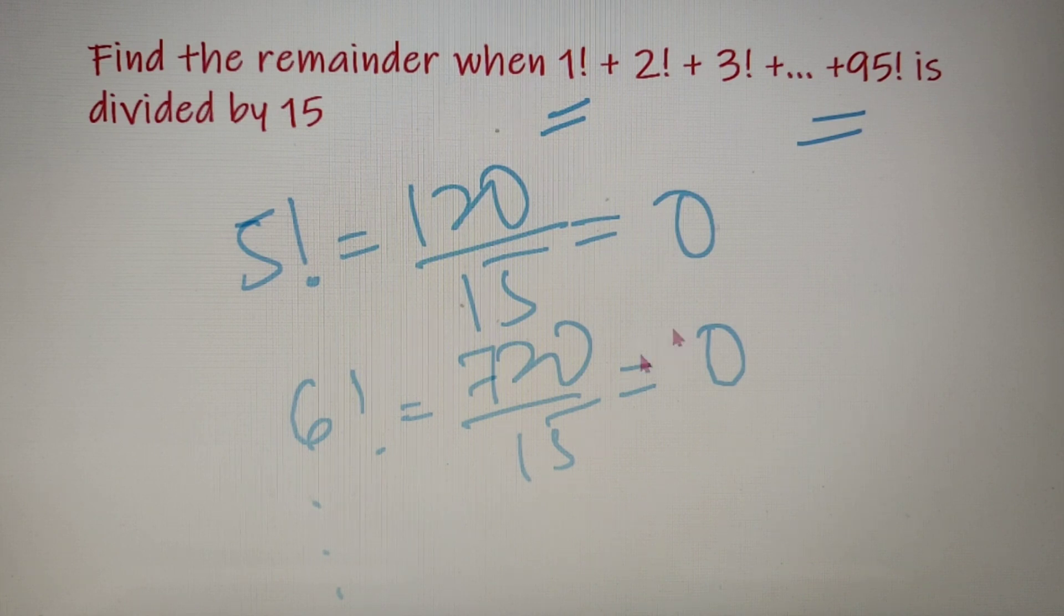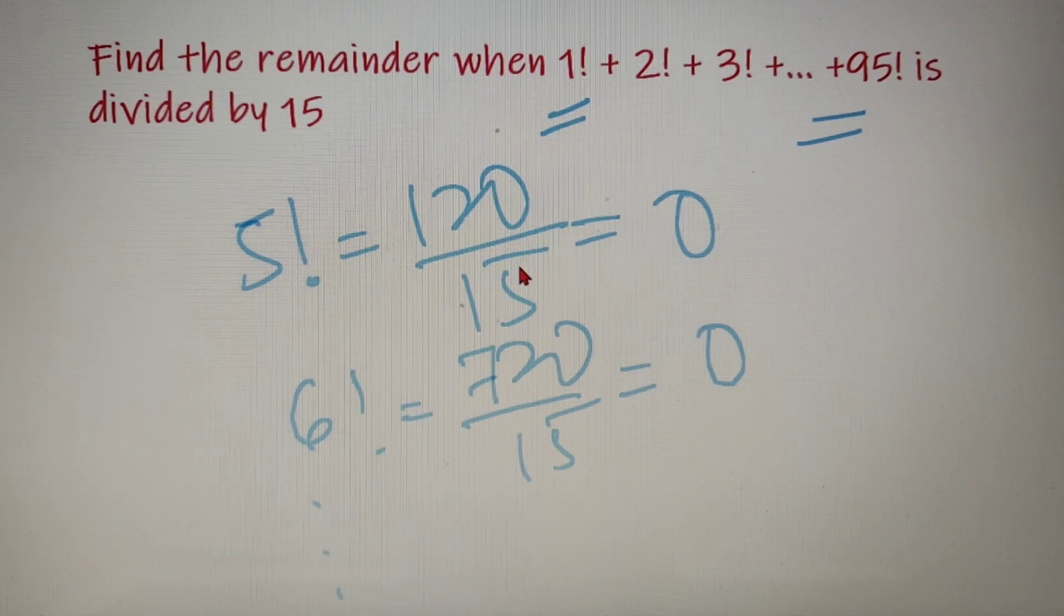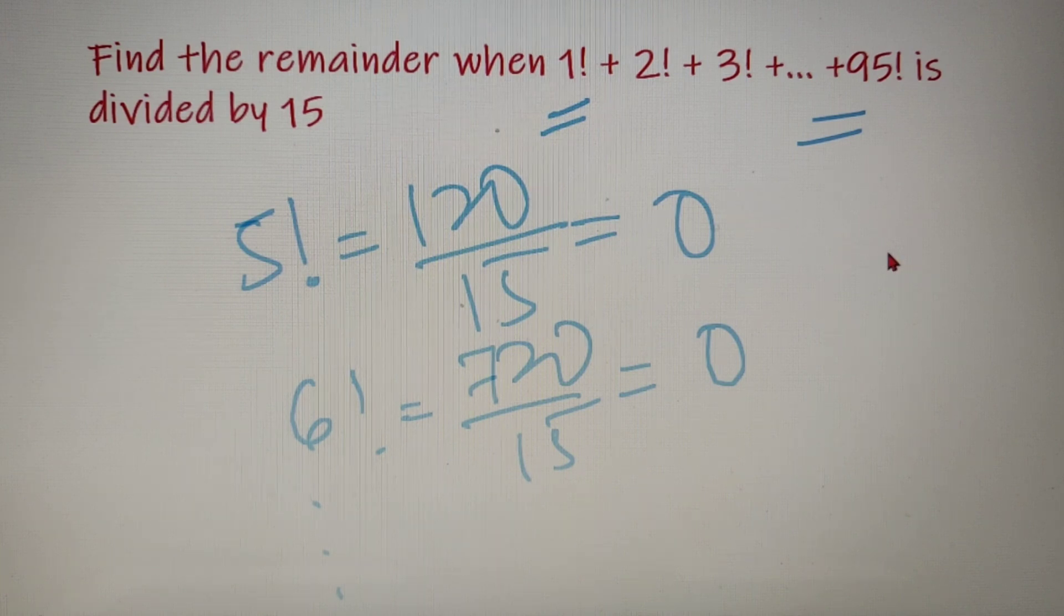So the numbers from 5 factorial are divisible by 15. So we only have to calculate the sum of all the numbers from 1 factorial up to 4 factorial and then we have to check the remainder and that will be our answer.